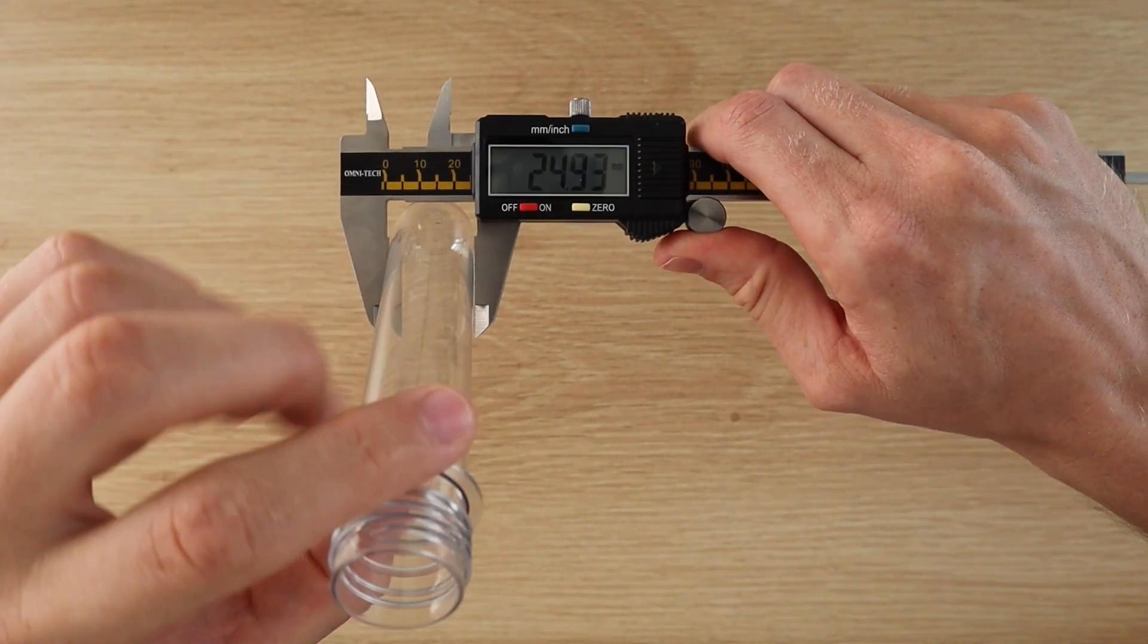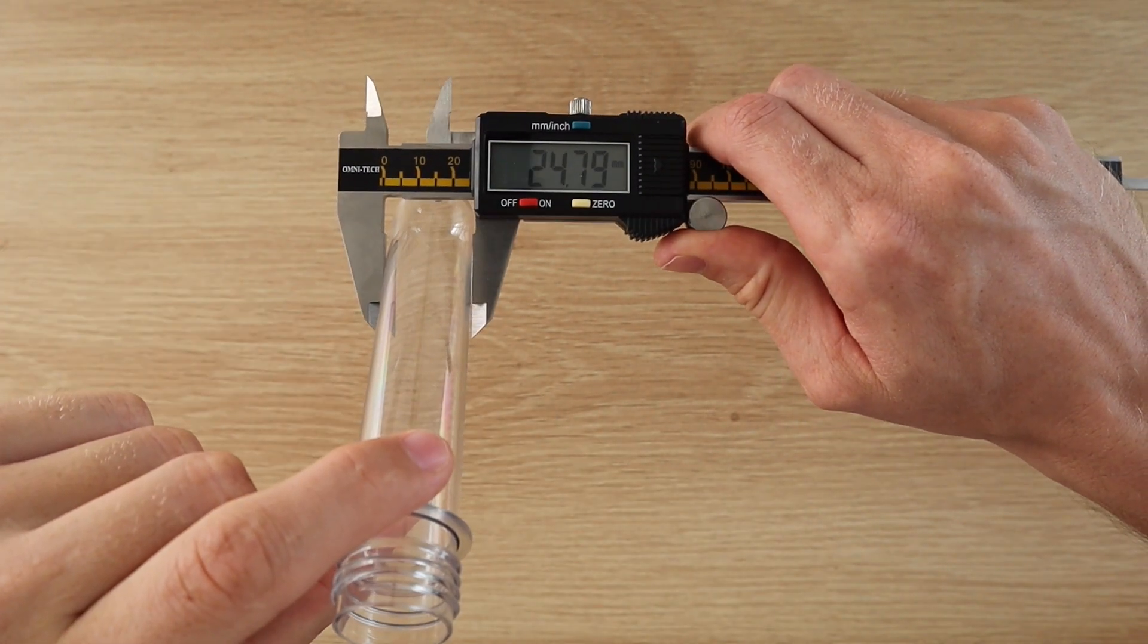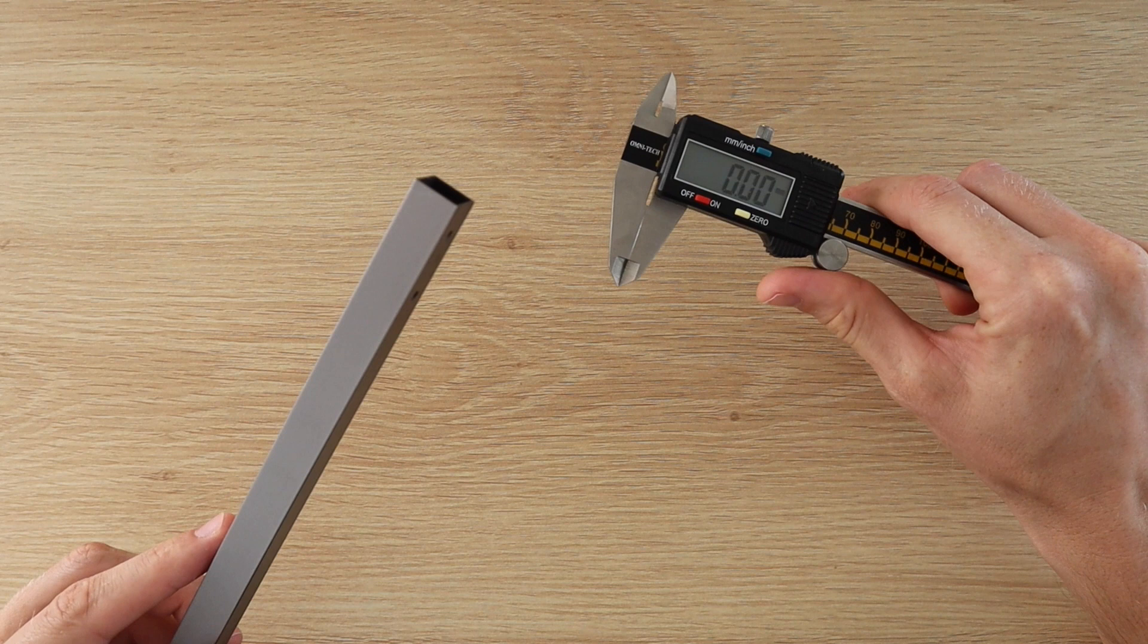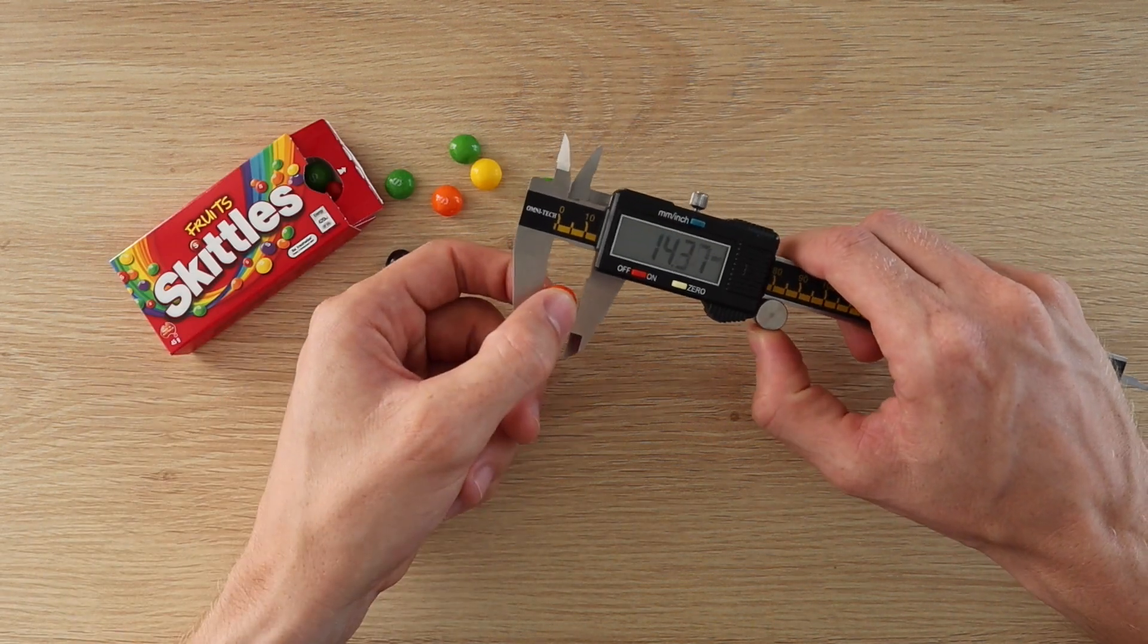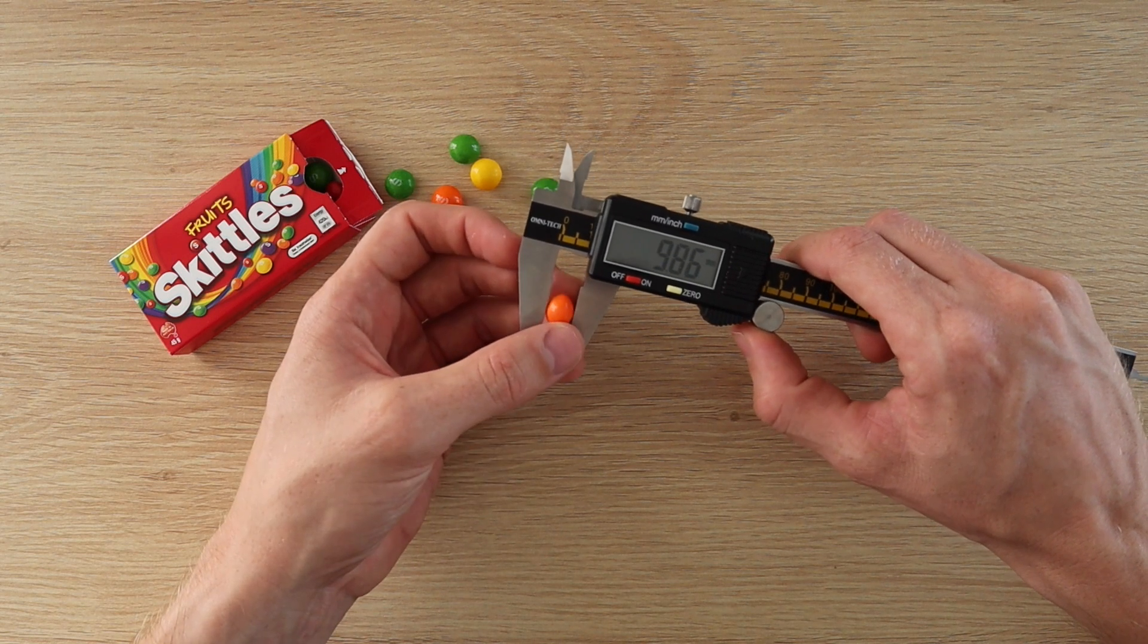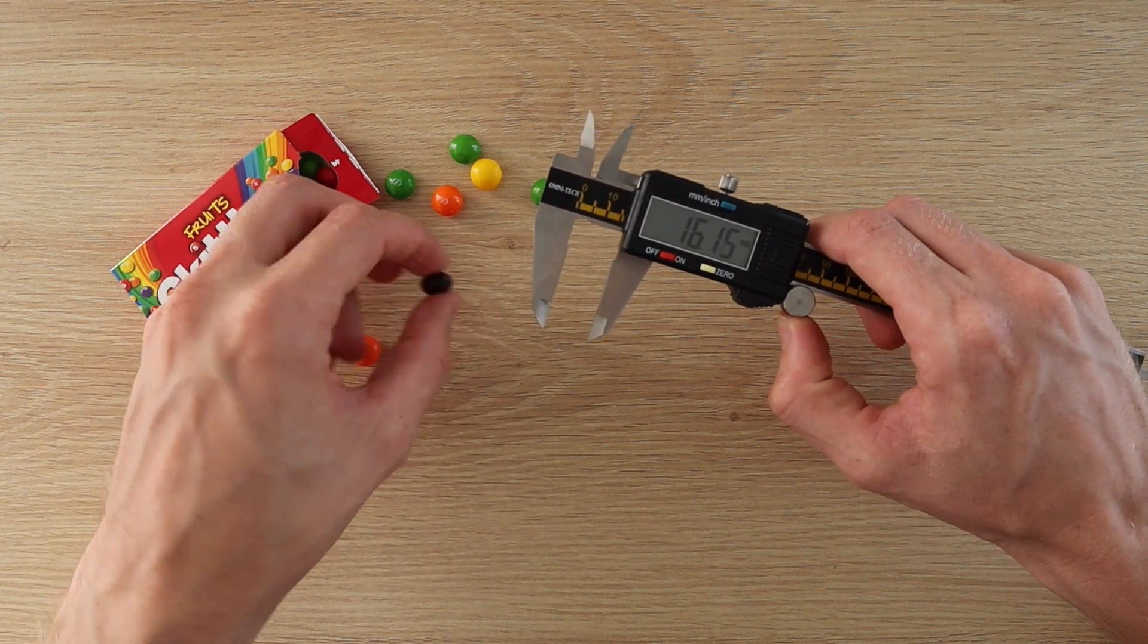I started off by measuring the components and then designing some simple plastic pieces which can be 3D printed to build the sorter. I've put links to download the parts in the video description. I also had to measure the Skittles in order to design the feeding and sorting mechanisms.